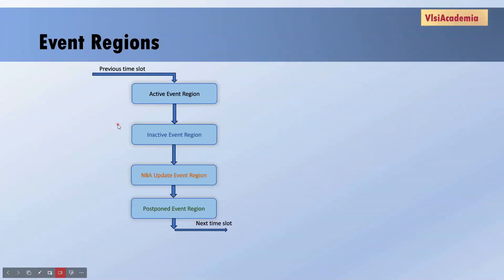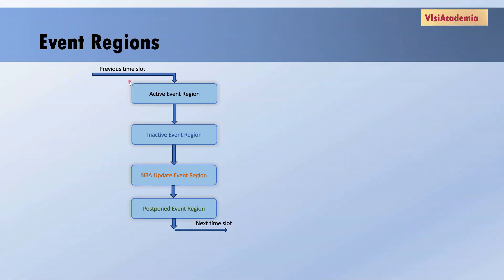So what are event regions exactly? In Verilog there are different types of statements like blocking assignments, non-blocking assignments, continuous assignment, $display, $monitor — and suppose if all of them are scheduled to execute at one simulation time, say at time 0 nanosecond, then who will decide the order of execution? Which statement will get priority over which? So for that, the IEEE standard has divided these statements into four event regions, and based on the event region they live in, their order of execution will be decided. So all these event regions are triggered at the current time slot.